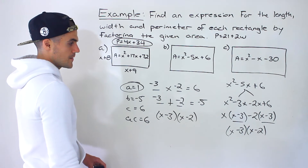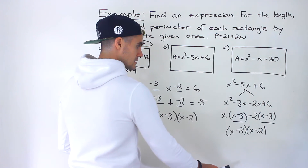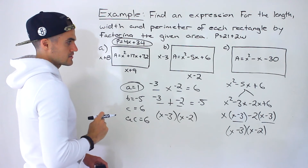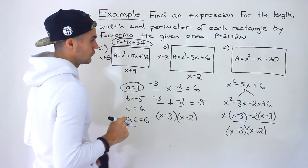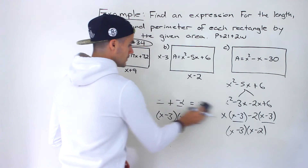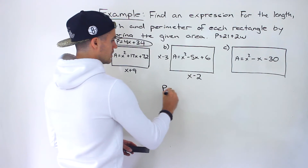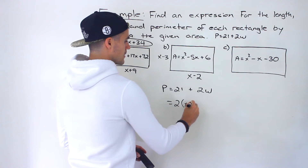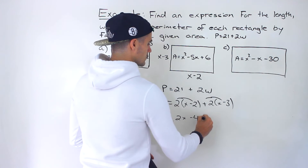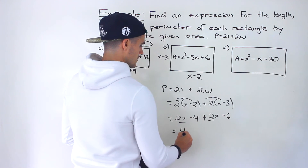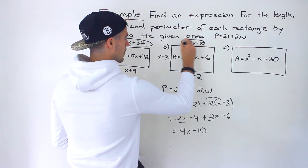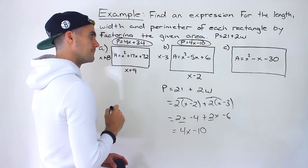So the length and width are x minus 2 and x minus 3. The larger value is x minus 2 (subtracting less), so that's the length, and x minus 3 is the width. These are interchangeable — I'm just keeping it to scale for the diagram. For the perimeter: 2 times (x minus 2) plus 2 times (x minus 3). Distributing gives 2x minus 4 plus 2x minus 6. Combining like terms: 4x minus 10. So the perimeter expression is 4x minus 10. That's it for part b.